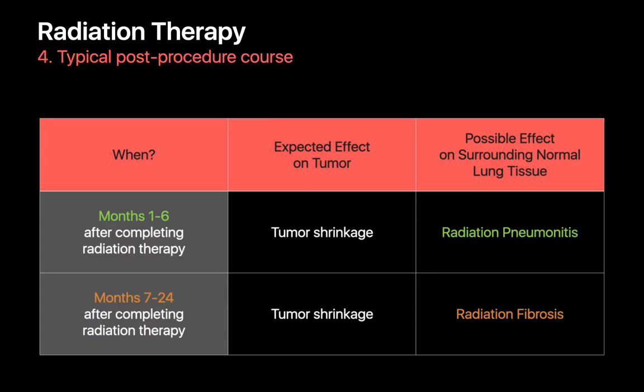When evaluating patients who have received radiation therapy to the lung, I approach their post-treatment course in two blocks: months one through six, and months seven through 24 after completion of radiation therapy. In a typical post-treatment course, we may see the lung cancer shrink throughout the first two years. We'll typically see radiation pneumonitis in the normal lung surrounding the cancer during the first six months, followed by radiation fibrosis in the surrounding normal lung during months seven through 24.